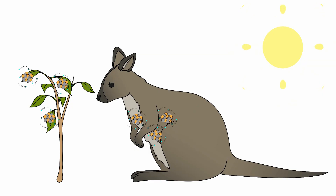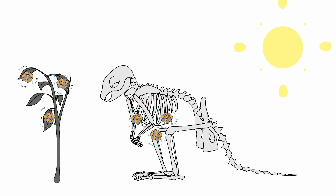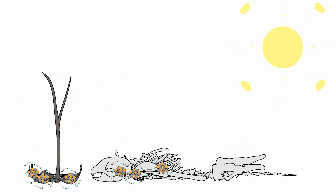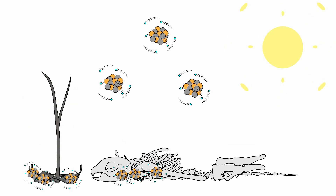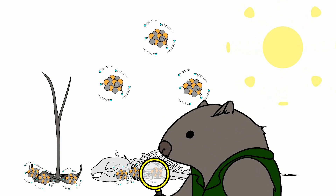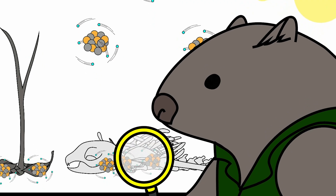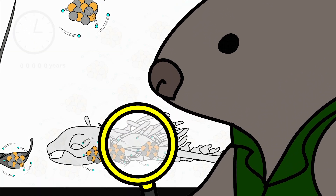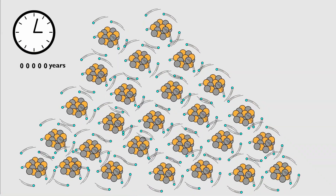When plants and animals die, no new carbon-14 can be absorbed into their tissues from the atmosphere. The bones, wood and shells left behind typically have the same amount of carbon-14 as their environment. Over time, bone, wood and shell lose carbon-14 through a process called radioactive decay. The rate of this decay is constant.